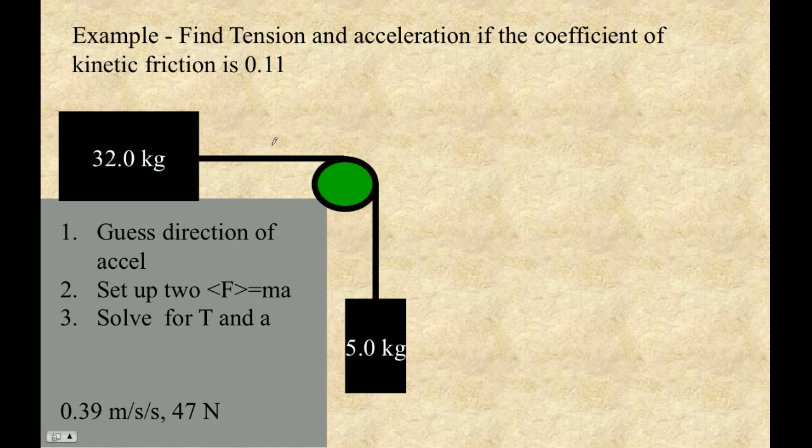Let's look at a problem where there's a pulley involved. Here's a 32 kilogram mass resting on this surface. There's a coefficient of friction of 0.11. The string goes from that one over this massless frictionless pulley and attaches to this guy. The weight of this one is going to accelerate this guy down.